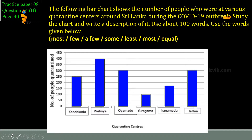There are six centers given in the graph: Kandakadu, Veliyoya, Oyamadu, Giragama, and Iranamadu are some of them. Then you have to write the trends and comparisons. The most number of people were at Veliyoya, while the least number of people were at Giragama. An equal number of people were at Oyamadu and Jaffna — that is 300 people. 250 people were at Kandakadu, and some of the people were at Iranamadu.